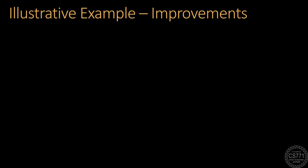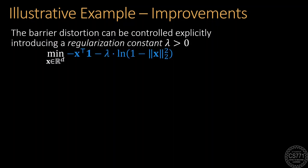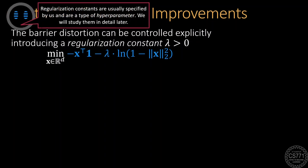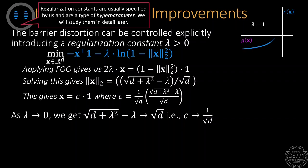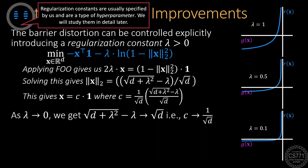However, not to worry, it is possible to control this distortion by introducing a regularization constant lambda that we multiply to the barrier function. Note that this constant is specified by us and not learnt or optimized. We see that after solving this modified problem, the solution does approach the correct solution as lambda tends to zero. This is understandable since lambda is controlling the strength of the barrier function and hence limits its distortion. Just look at these plots to appreciate how small values of lambda make the barrier function almost a perfect one.